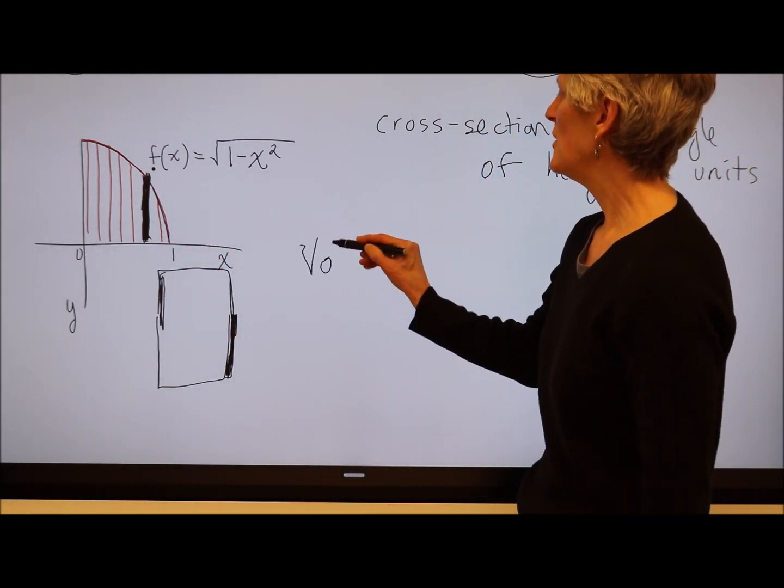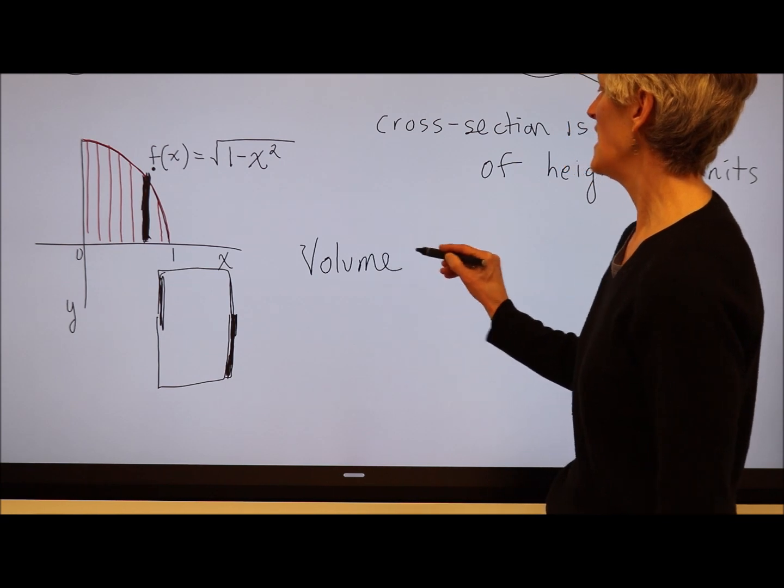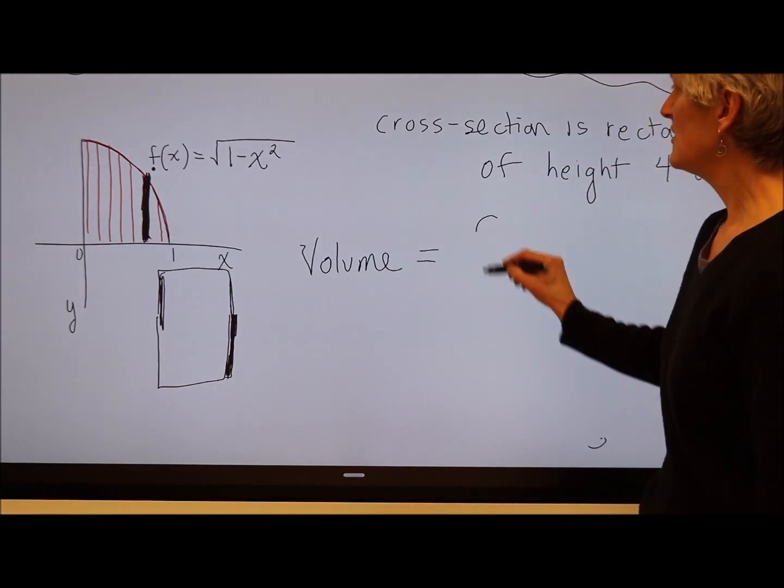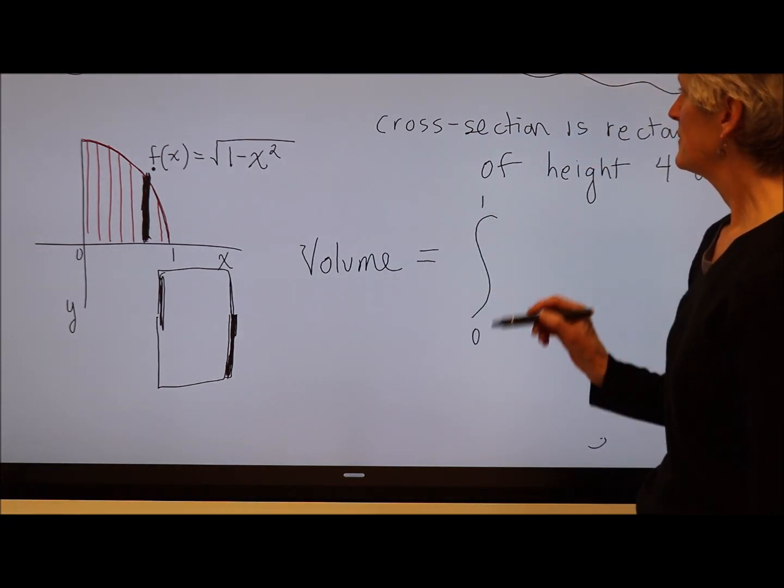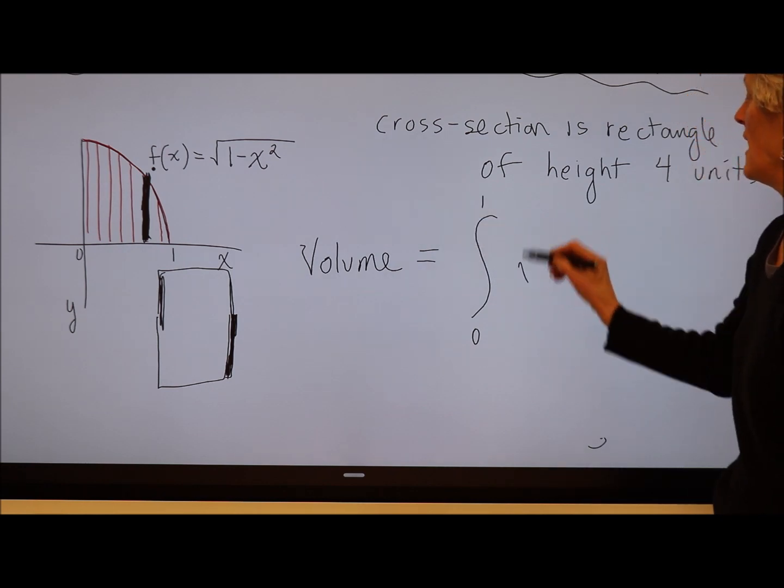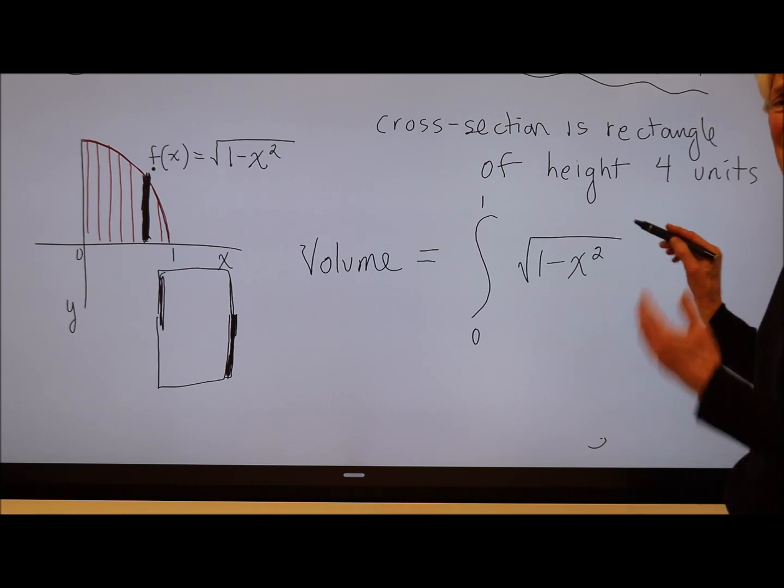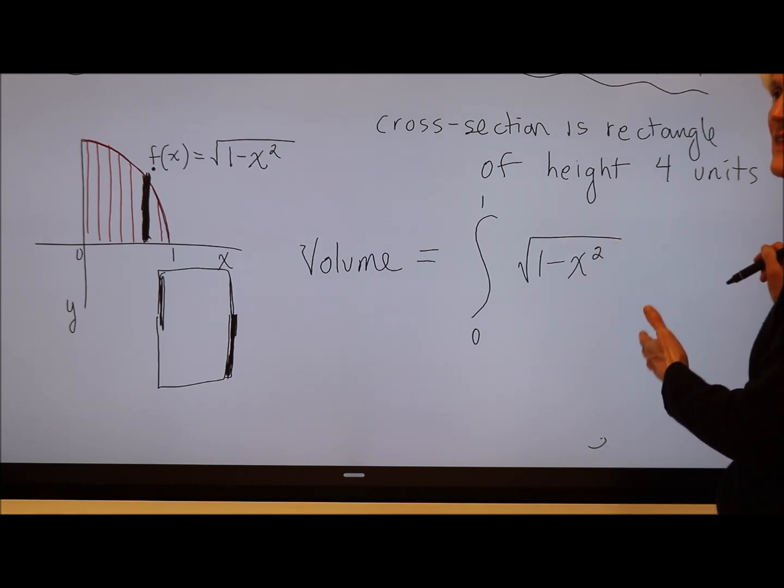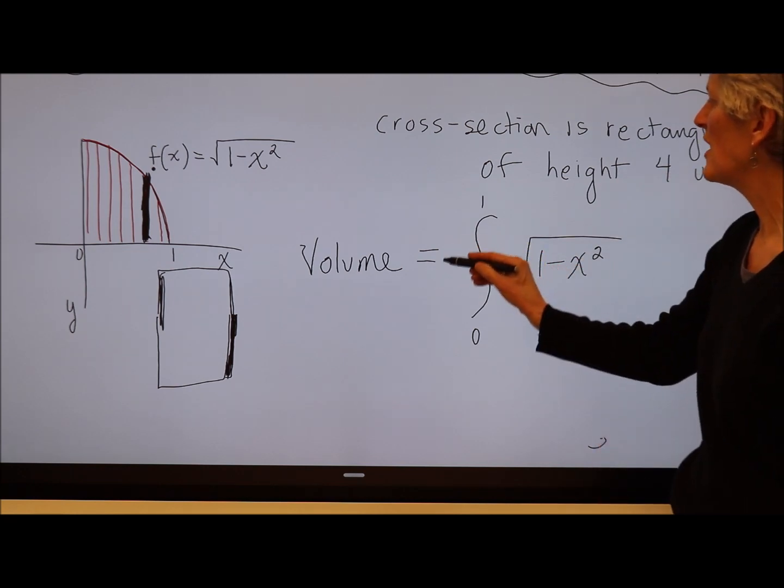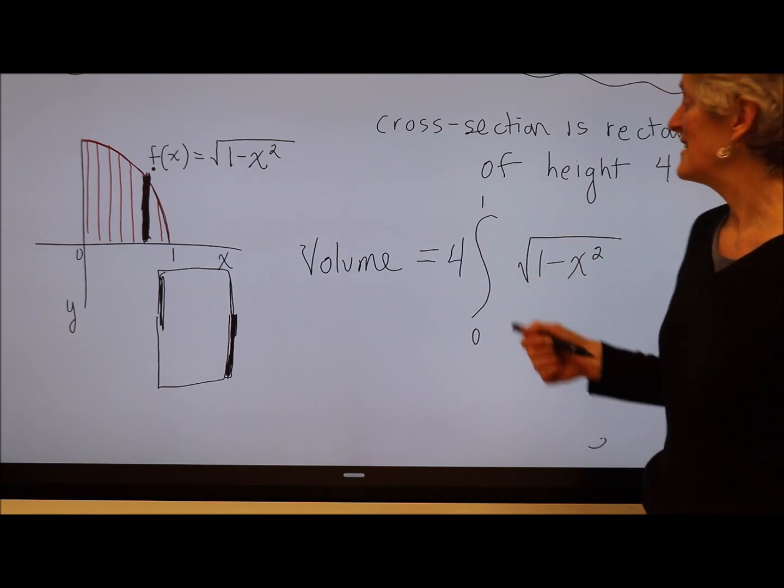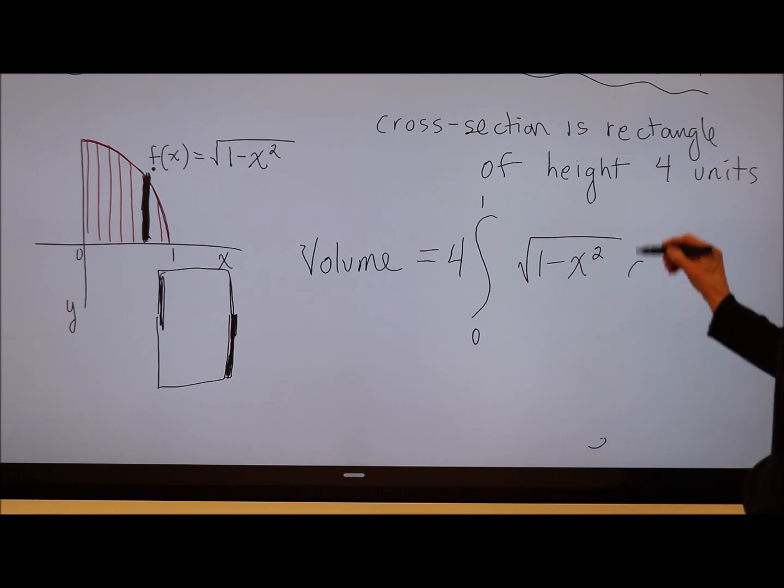Okay, so the volume of this different type of solid is still going to be from 0 to 1. It's still going to be my distance between my curves. But now, instead of that times itself to get the area of a square, I'm getting the area of a rectangle. I'm going to multiply that times 4. Since 4 is a constant, I'm just going to throw that out front. Boom. And there you go.